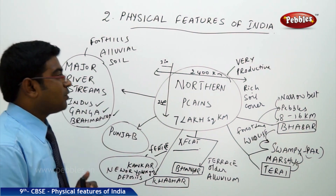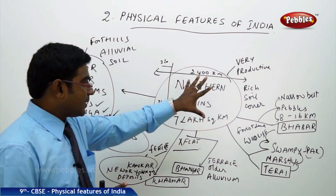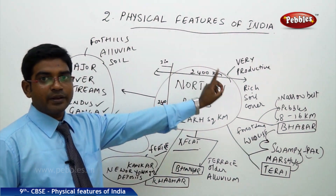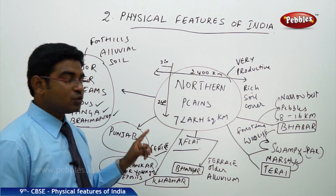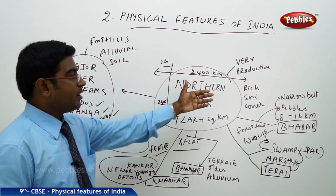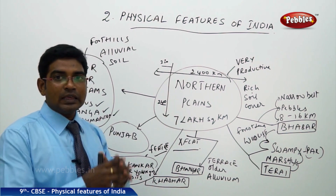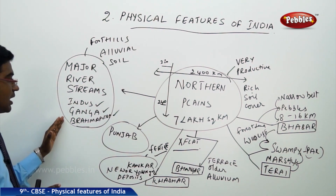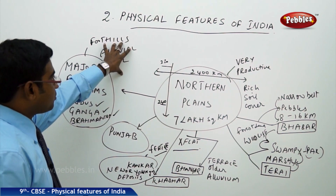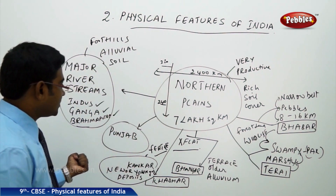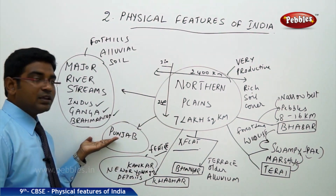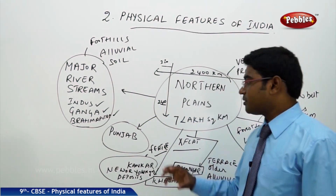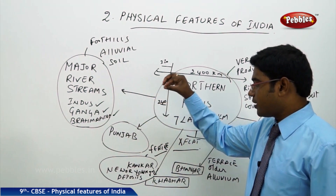Let us have a brief recap of Northern Plains. The Northern Plains exist over 7 lakh square kilometers. Its length is 2,400 kilometers. Its width varies from 320 kilometers to 240 kilometers. This is very productive and very rich in soil cover of the entire Indian land. We have major river streams like Indus, Ganga, and Brahmaputra. These rivers brought alluvial soil towards the Northern Plains. Punjab has got its name because of the Indus tributaries merging into five major tributaries, meaning five tributaries joining together here, making it a very fertile place.